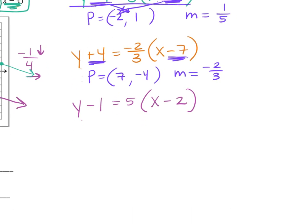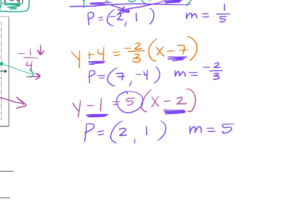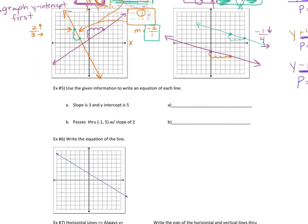Third equation: what does this become? The point is (2, 1) — positive two, positive one — and the slope is five. M is always the letter used for slope. Why M and not S? Probably because S kind of looks like a five. We are not mathematicians, so we can't change it.